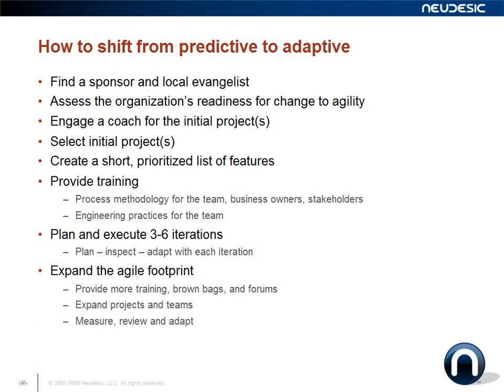It's also good to have a local evangelist — somebody who is excited, has some experience around agile practices, and can talk about the benefits on a day-to-day basis. Once you have those two key components, the next step is to assess the organization's readiness for change to agility. In taking a look at this, you may want to consider the types of projects you're running, the types of software you're developing, your teams, your business environment, and your technology environment.